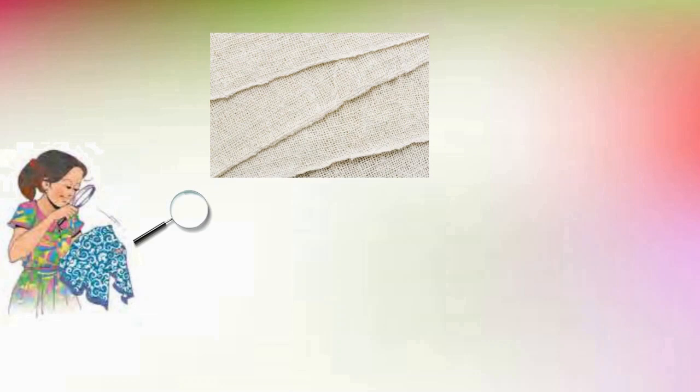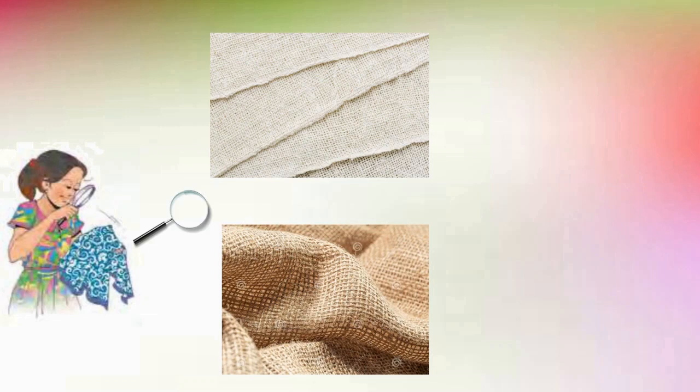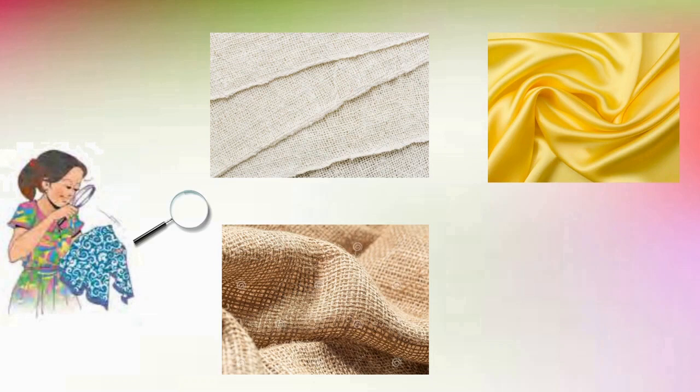Here a small girl is observing the cloth by using a magnifying glass. This helps us to see objects 10 times greater. When we see the cloth using a magnifying glass, we can see the threads by which the cloth is made — these are called threads or yarns. Here you can also see a different type of cloth that is very shiny and smooth. It also has threads, but they are soft and very thin.